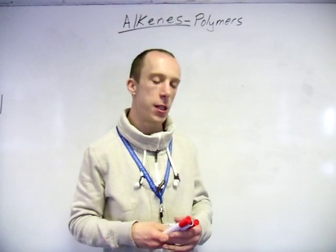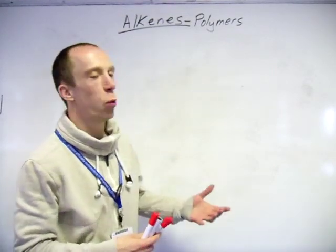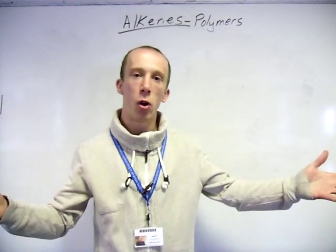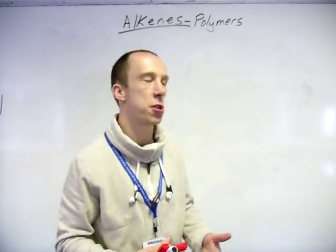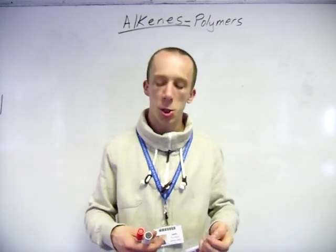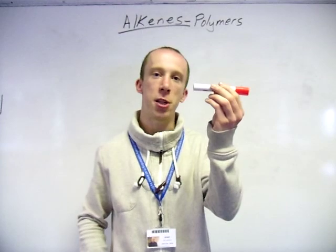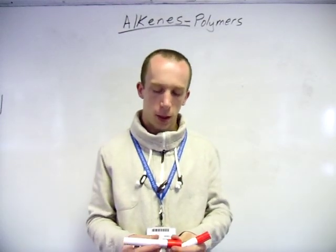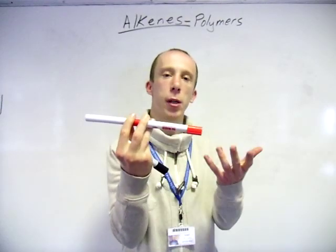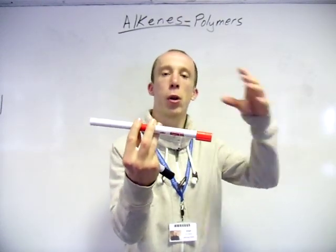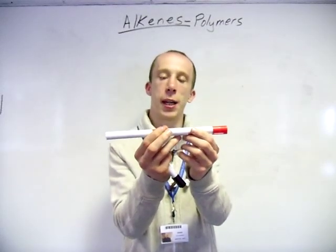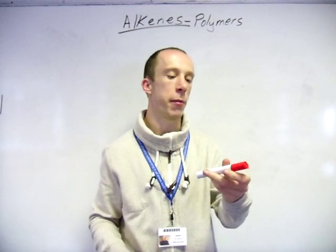One final bit to finish off the alkenes — the polymers. So what a polymer is: a polymer is just a very long chain made up of repeating units, so monomers in other words. The easiest way to visually imagine it is if we say this red pen is a monomer, then if I start linking together lots of red pens like that, I would have a polymer — just a long chain molecule made up of many monomers, many small molecules being linked together.